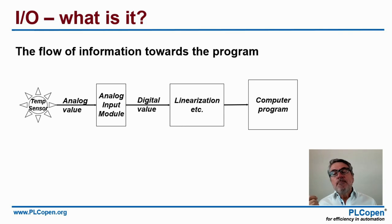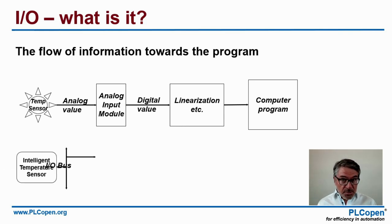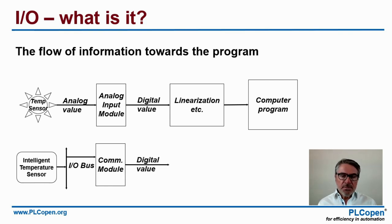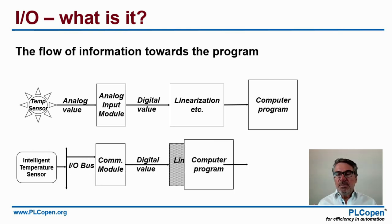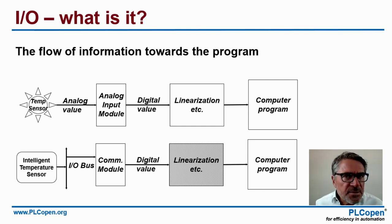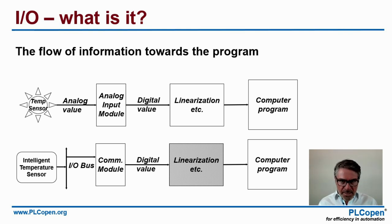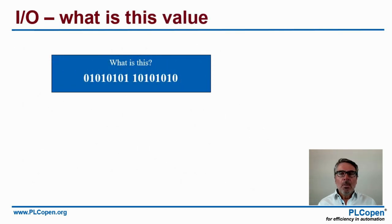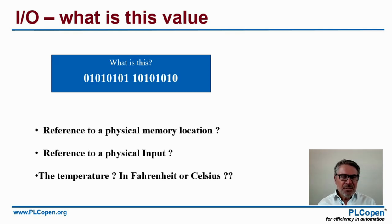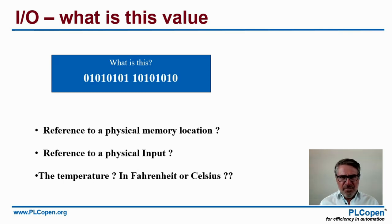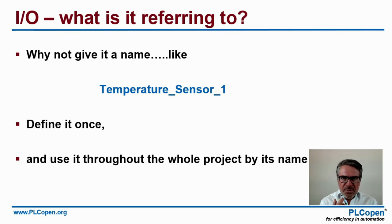When we look at the computer program, we suddenly see zeros and ones. What is this — a reference to a physical memory location, a physical input, a value? Is this the temperature? Is it in Fahrenheit, Celsius, or Kelvin? For that reason, we give it a name — that's the first step. We define that name once and use it throughout our whole project.